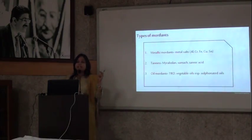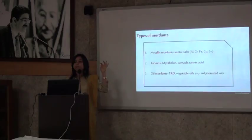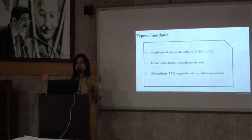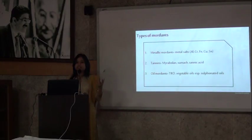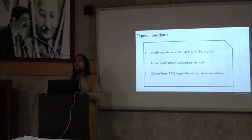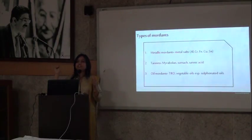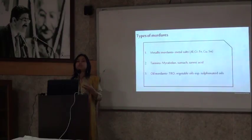There are three categories of mordants. Metallic mordants, which include metallic salts. Then tannins, which include natural dyeing sources. And then oil mordants, which include TRO — that is turkey red oil — and vegetable oil. These are oils which we derive from minerals.